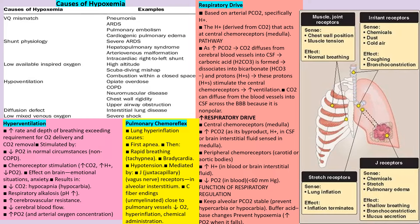There are two types of chemoreceptors: central and peripheral. The central chemoreceptor is in the medulla; the peripheral chemoreceptors are the carotid and aortic bodies. Peripheral chemoreceptors are activated by increased pCO2 or decreased PO2 below 60 mmHg. Central chemoreceptors are activated by increased H+ ions. When pCO2 rises, CO2 diffuses from blood vessels into the CSF, combines with water to form carbonic acid, which dissociates into H+ and bicarbonate; H+ stimulates the central chemoreceptor, causing hyperventilation to blow out excess CO2.